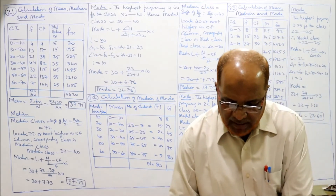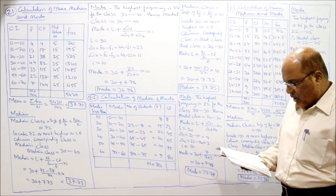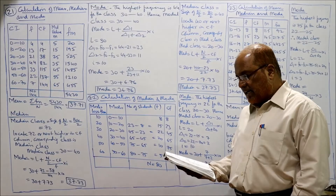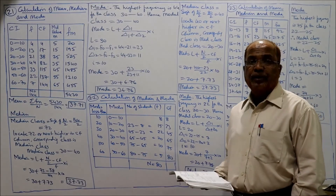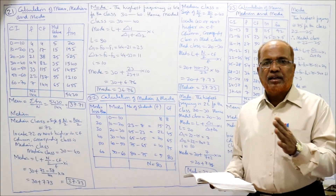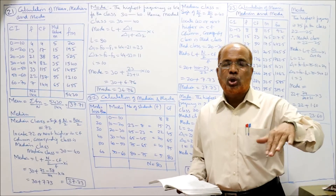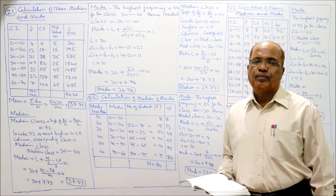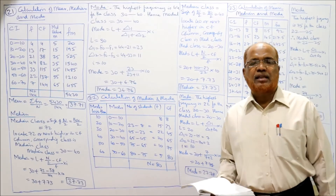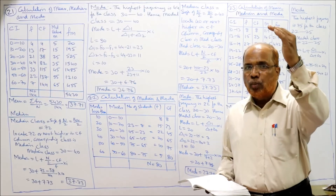Now problem number 22. Calculate median and mode for the following data. Marks: less than 10, less than 20, less than 30 — it is a cumulative frequency distribution. When 'less than' or 'below' is given, the distribution is cumulative and we must convert it into a normal frequency distribution before calculating the averages. To do so, subtract from the top (upper minus lower).